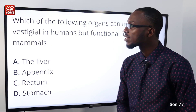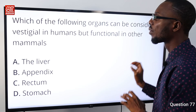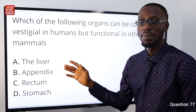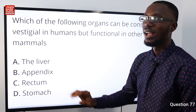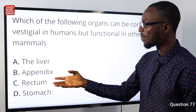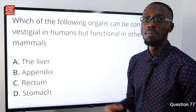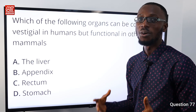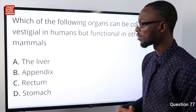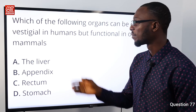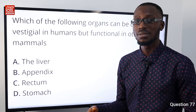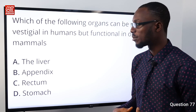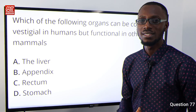Question 77: Which of the following organs can be considered vestigial in humans but functional in other mammals? That would be your appendix and even the tailbone. The appendix does not have a primary function that science can confirm. The appendix is the vestigial organ found in humans, but in other mammals it is useful. In man, it is near useless, so option B is the correct answer.